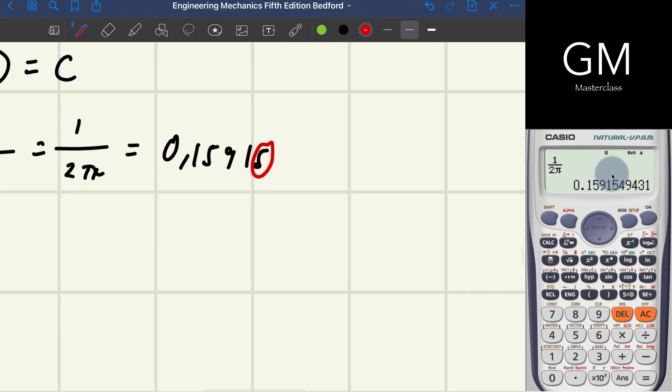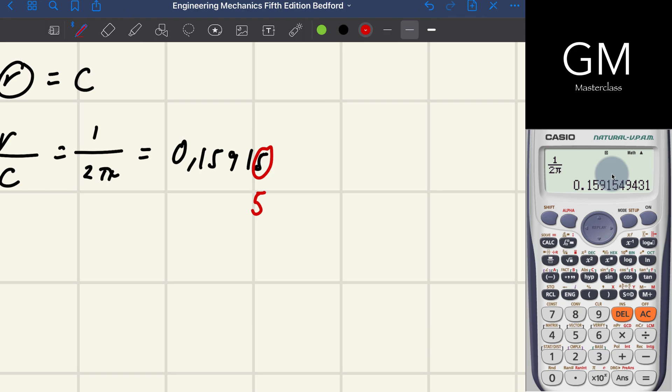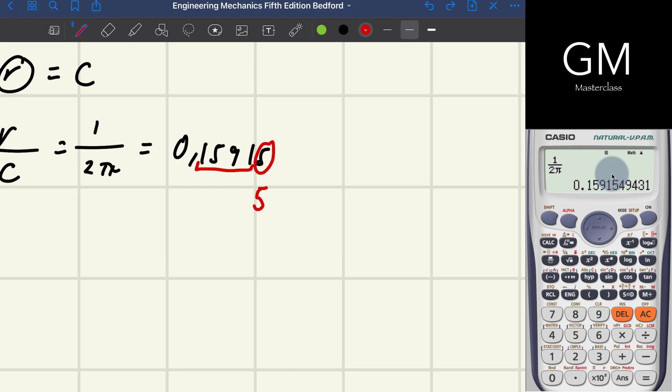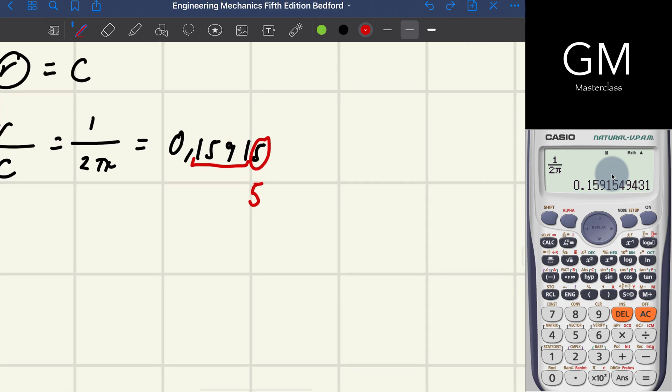There's a rounding rule: when the exercise asks you to get a certain number of digits after the decimal point, you have to look at the next digit. That digit tells you whether to keep the number the same or increase it.